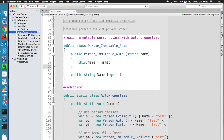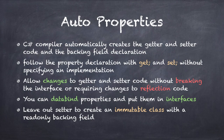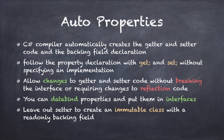Let me summarize what we have learned in this lecture. Auto properties are a feature where the C# compiler automatically creates the getter and setter code and the backing field declaration. You write auto properties by following the property declaration with get and set, without specifying their implementation. Auto properties are useful because they allow future changes to getter and setter code without breaking the assembly interface or requiring changes to reflection code. You can also data-bind to properties and put them in interfaces. You can leave out the setter to create an immutable class with a read-only backing field and no setter.